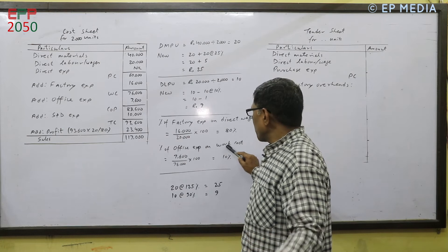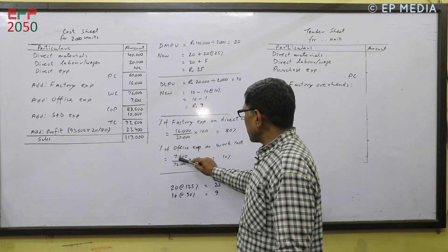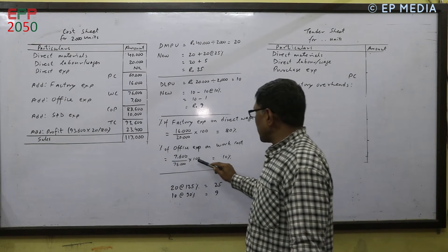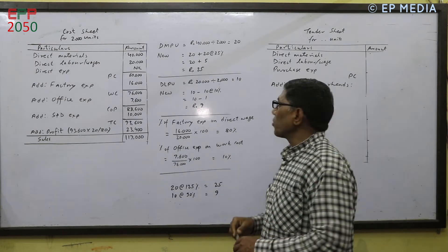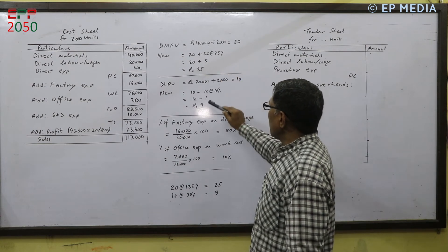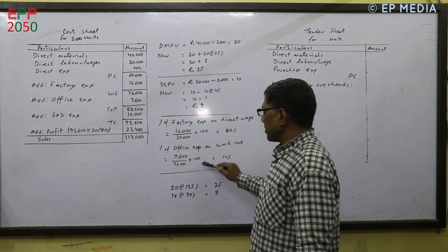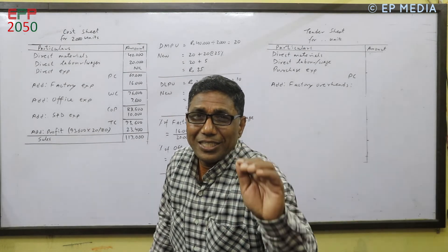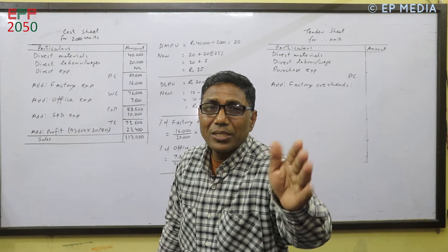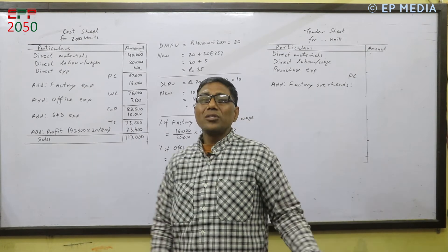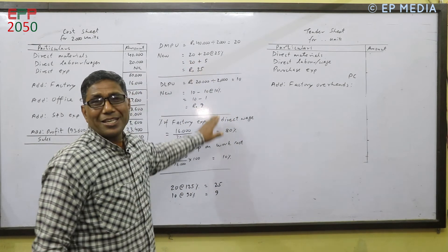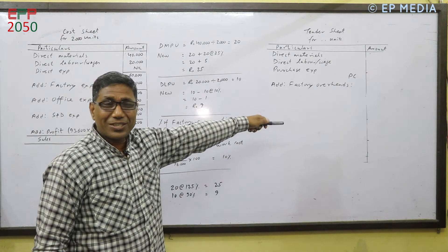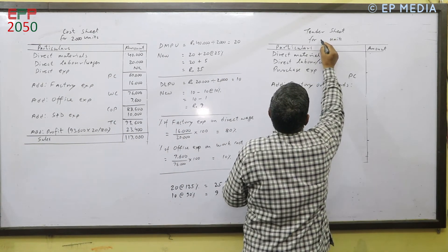We need to do the percentage of office expenses on work cost. Office expenses are 7,600, and work cost is 76,000, so office expenses are 10% of work cost. We need to work out material, labor, factory expenses, office expenses, and selling and distribution. So on this question, for 3,000 units, you can make a tender sheet.